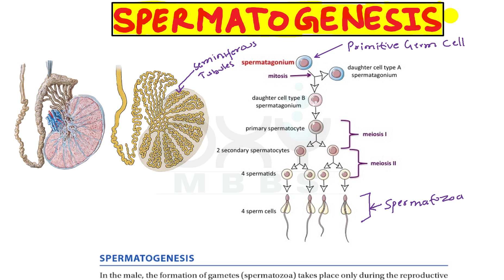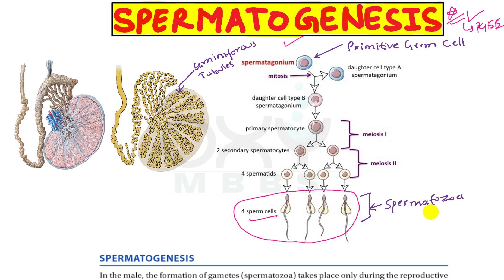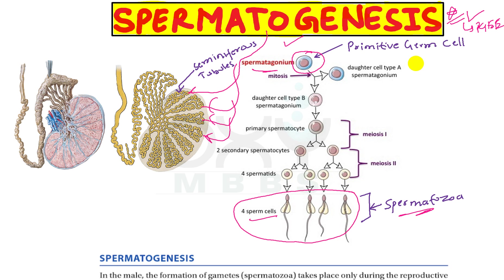Spermatogenesis is the process in which mature male gametes, called sperm cells or spermatozoa, are formed from the primitive germ cell called spermatogonium. This process takes place in the seminiferous tubules present in the testes, and spermatogenesis takes about 75 days.